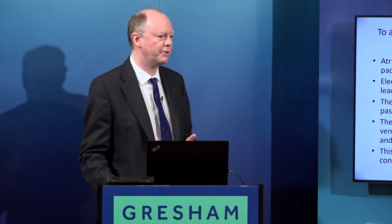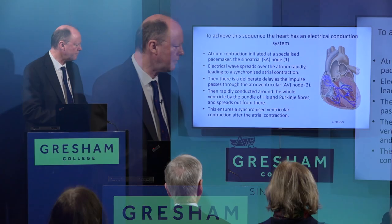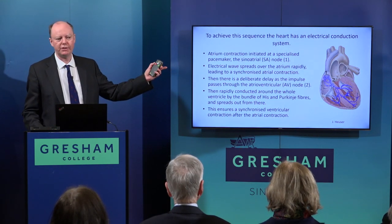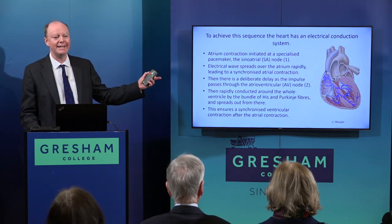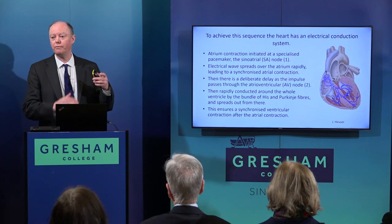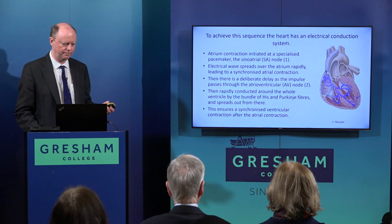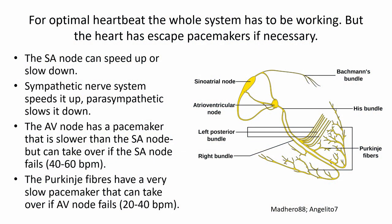This sequence is happening in all of you all the time. The delay at the atrioventricular node — the AV node — is very important, because if that delay didn't happen the atrium wouldn't beat before the ventricle in a nice steady sequence. The SA node at the top of the heart can speed up or slow down under control of the sympathetic system — the fight-or-flight system — which speeds it up and also speeds up conduction through the AV node, while the parasympathetic system slows it down.